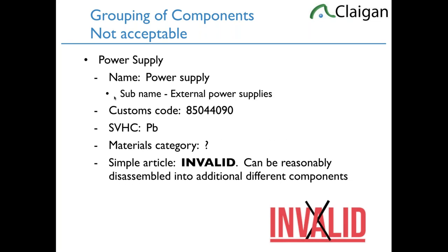Another situation that comes up with a lot of companies: 'Our power supply — the manufacturer said it had these three SVHCs.' So what are you going to declare in IUCLID? The power supply? You can't do that. You have to declare the components: the leaded brass, the DMAC and the Nomex, the lead and the high temp solder — it has to be at the component level. Even though you could describe it as an external power supply and give it a customs code, the materials category pull-down for power supply doesn't exist. The reason you can't do it: it's not a simple article. You can take a power supply apart into simple articles — the brass standoff, the current limiter, the diodes, the plug.